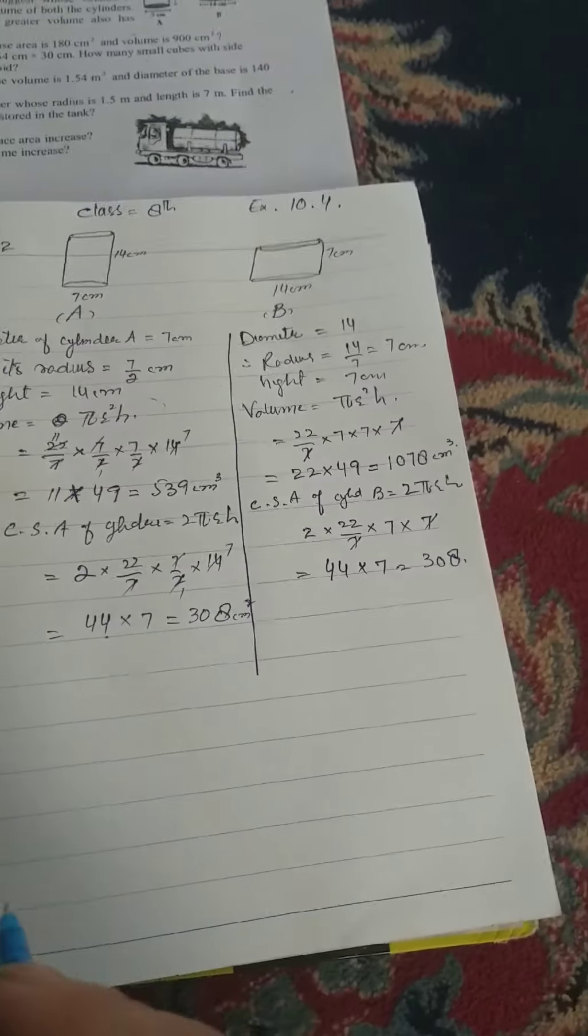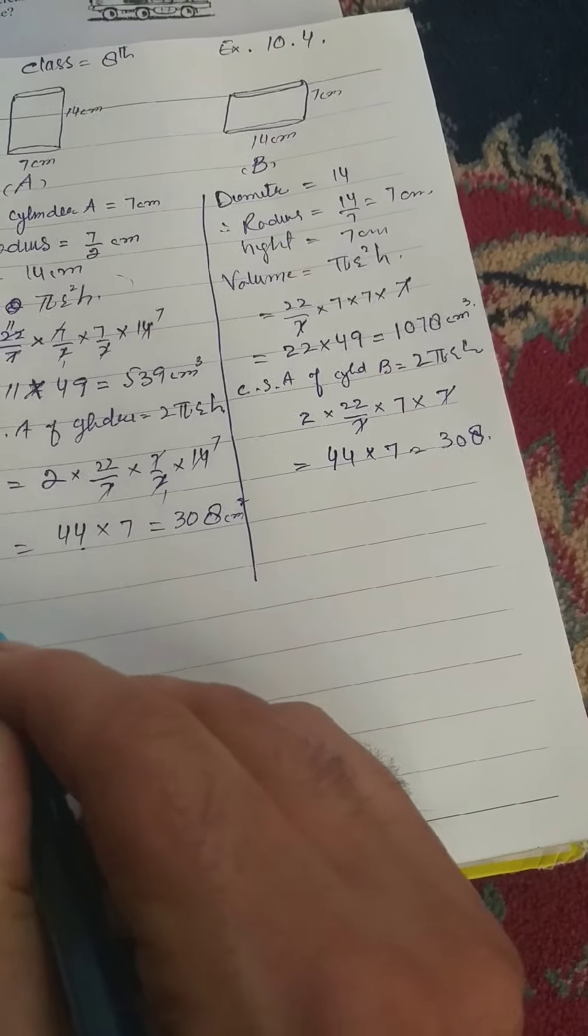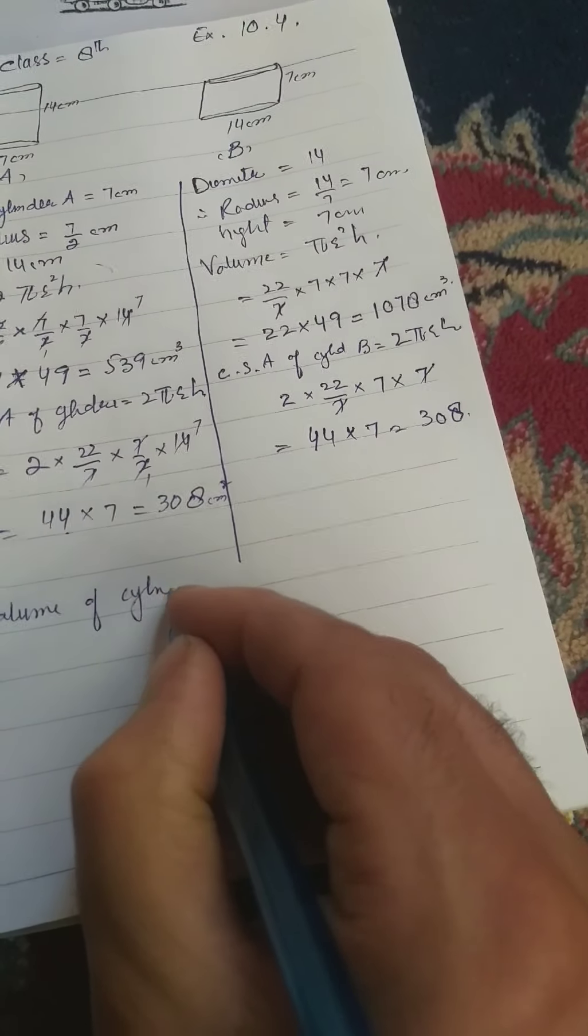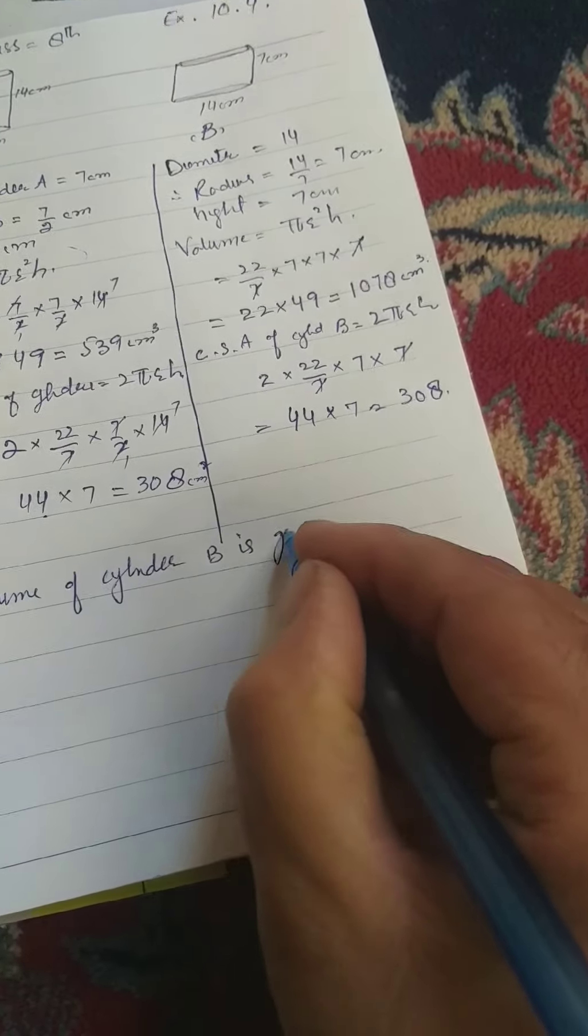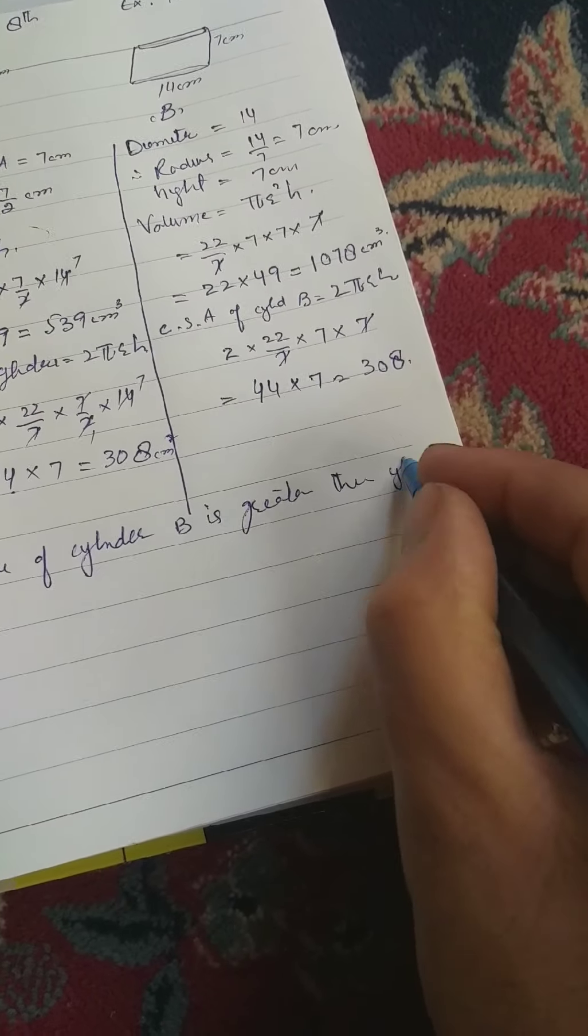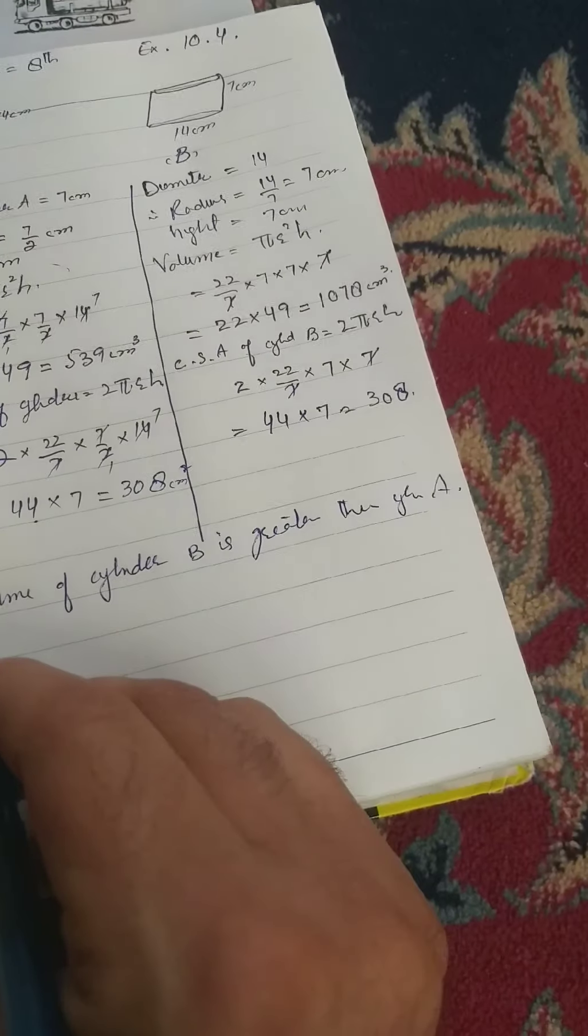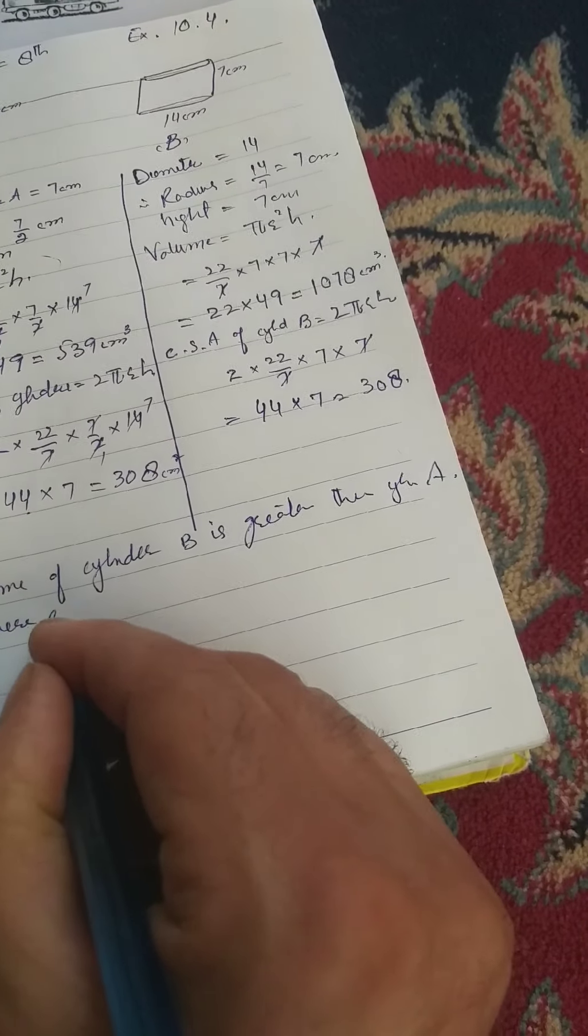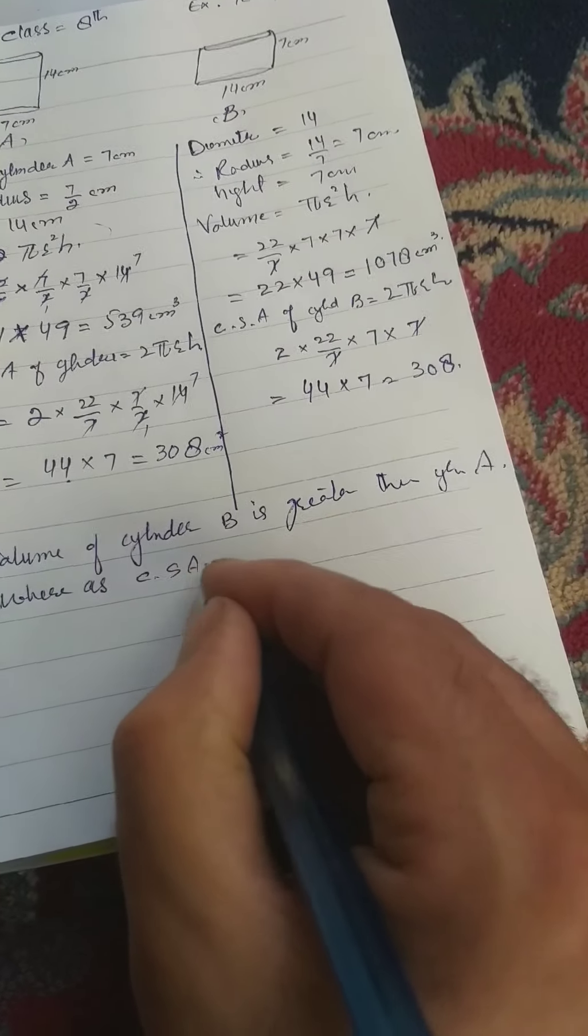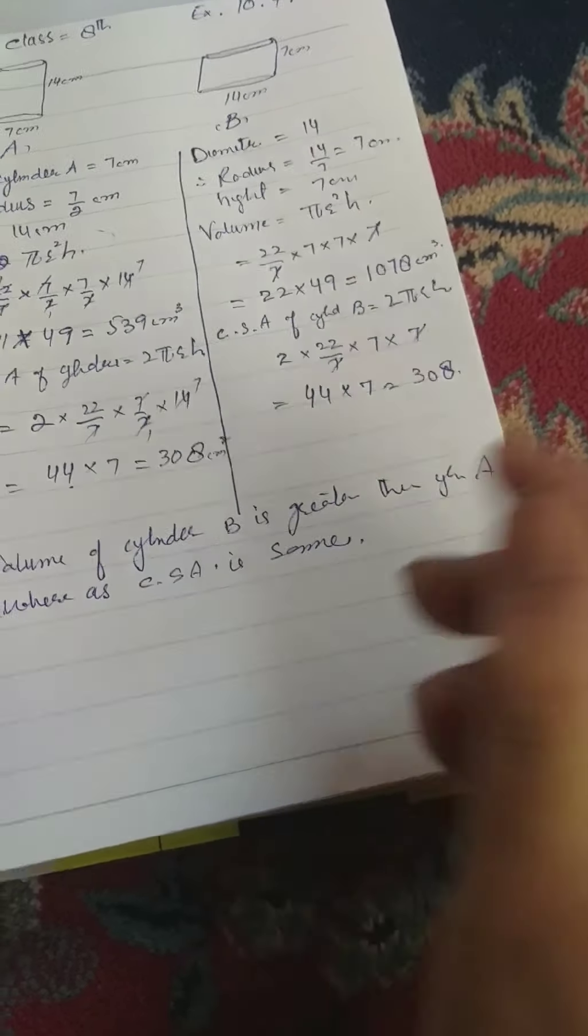It means we will see the volume of cylinder B is greater than cylinder A, whereas surface area, curved surface area is same. Okay, thank you.